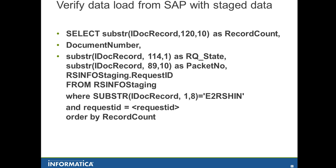Finally, a query is provided here to verify the data that was loaded to the staging table. This information can be found from the RS info staging table, which is populated through the RS info basic IDOC type. The source IDOC table is populated through the basic IDOC type ZSIM1000 by default, or based on whatever basic IDOC type you configured for your logical system. The RS info staging table contains information on the packet number, the RQ state at that time, and the record count sent. You can get the request ID from your BCA listener or the send request mapping session log and use it to find the current state of your load and whether the record count from RS info staging matches what was loaded in the source BC table.